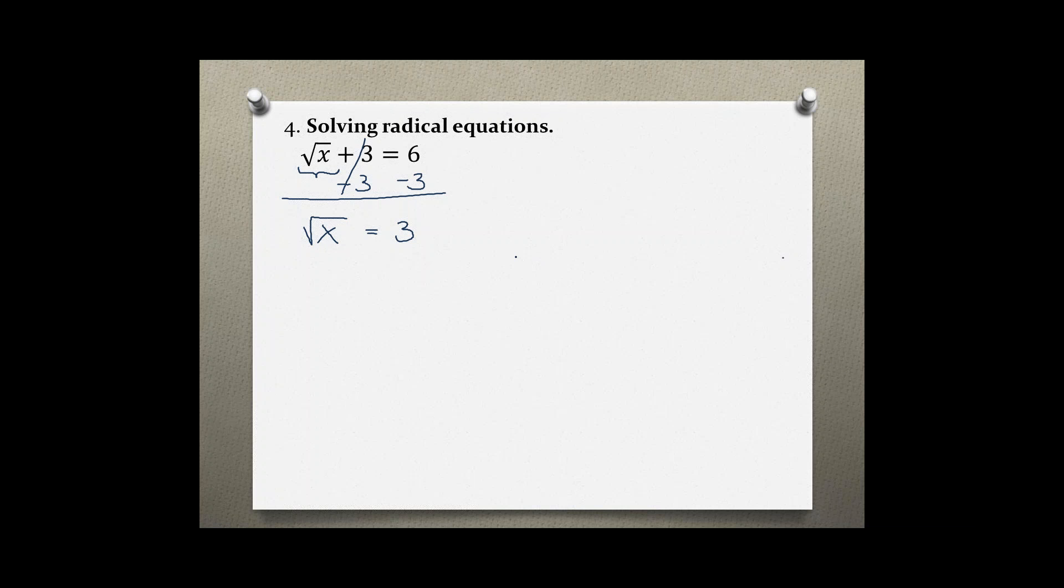Now I can use the property of squaring both sides to eliminate the radical because the index is 2 and the root and the square cancel each other out.